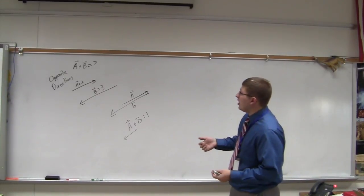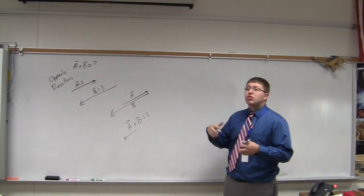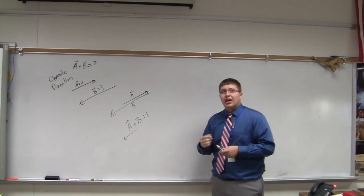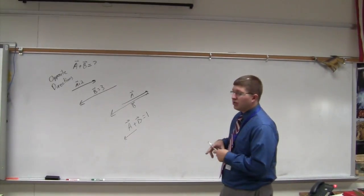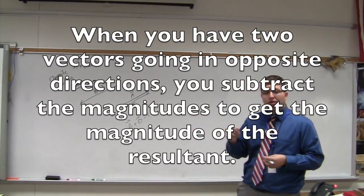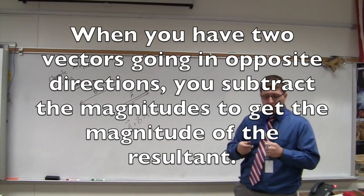If you have two vectors going in opposite directions, all you have to do is subtract the magnitudes to get the magnitude of the resultant. Again, I would put that in your notes even though it didn't go up on the board. Two vectors going in opposite directions, you subtract the magnitudes to get the magnitude of the resultant.